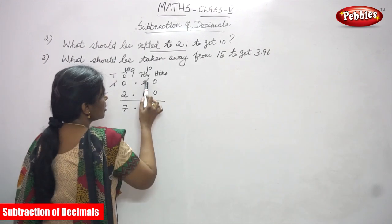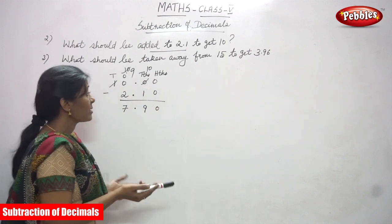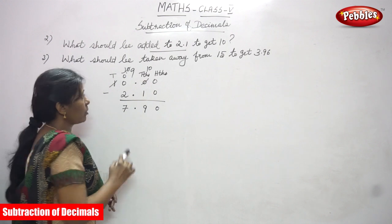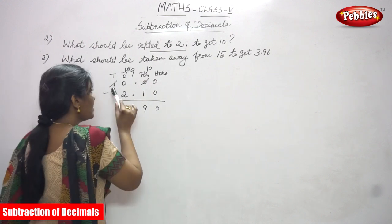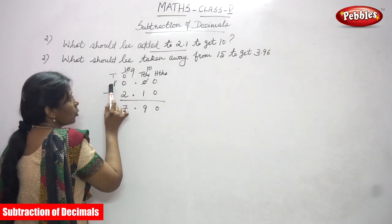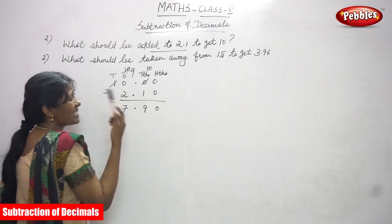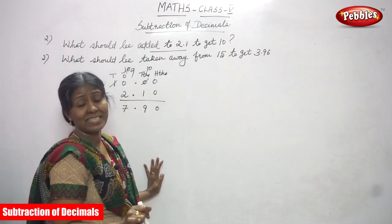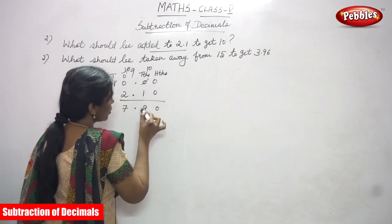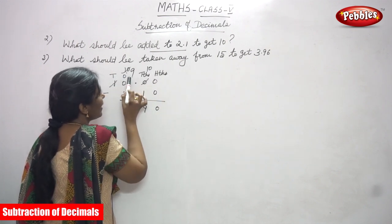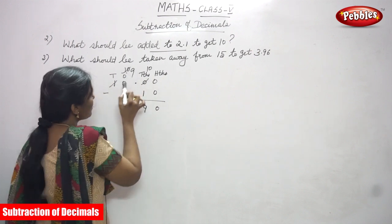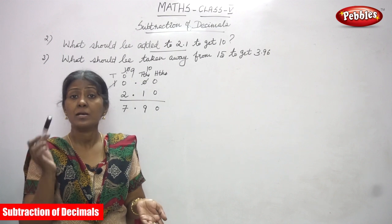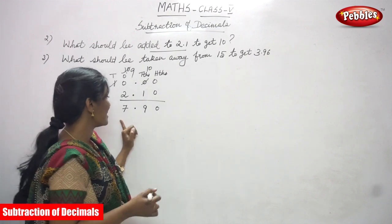0 minus 0, you can get 0. Then 0 minus 1 — you can't subtract. So, I will go to the 1's place — that is the whole part — but here also it's 0, so I can't subtract. So, I will go to the 10's place value. The 10's place has the number 1. So, I am borrowing from 1. This 1 becomes 0. The 1's place 0 becomes 10. I am again borrowing from this 10, so this becomes 9. In the 10ths place, this 0 becomes 10. So, 10 minus 1 you can get 9. Then, 9 minus 2 in the whole part 1's place — the top number is 9 — so 9 minus 2 you can get 7. Already 1 is cancelled because you are borrowing from it. There is no number afterwards. This 1 becomes a 0, so I just cancel it. The answer is 7.90.